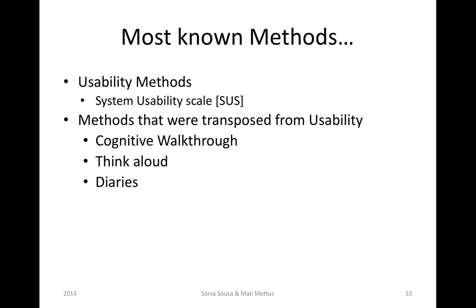One of these methods is called System Usability Scale. Basically, it's a questionnaire that you give to the user after he performs some activities with your product. And it can measure these three dimensions: effectiveness, efficiency, and satisfaction.